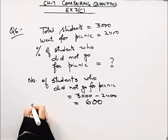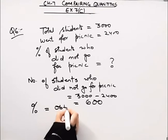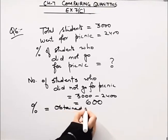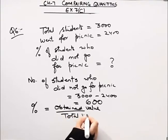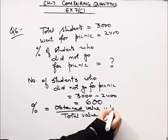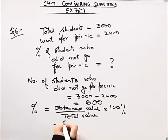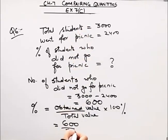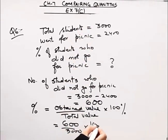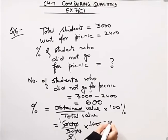Now we will find out the percentage of students who did not go for the picnic. The obtained value is 600. The total number of students is 3000.